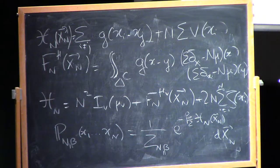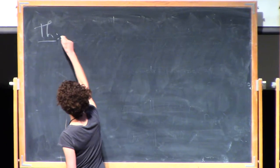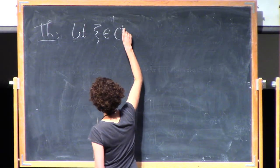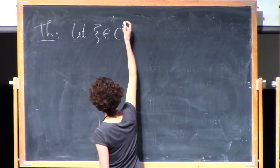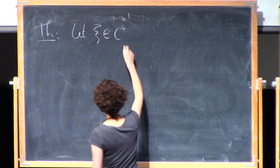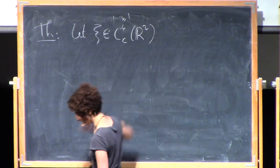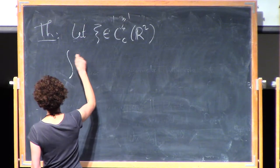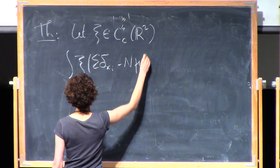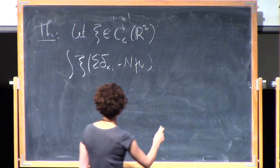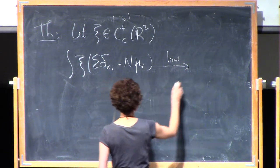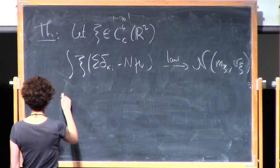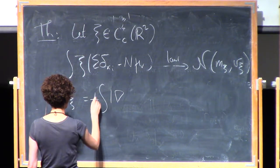The thing we want to prove is something like this. So let's write the theorem. Consider xi a regular enough function — let's assume four derivatives; what we really need is that the third derivative is Lipschitz — compactly supported in R². I'm going to state the theorem in the two-dimensional logarithmic case. So you want to consider the fluctuations of xi. Then this converges in law to a Gaussian random variable with a certain mean and a certain variance, which are explicit.